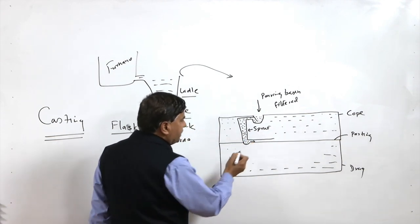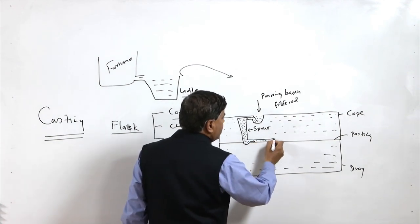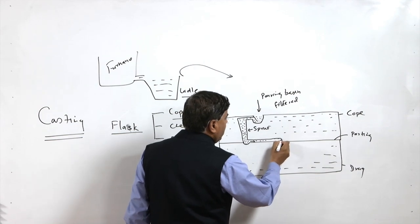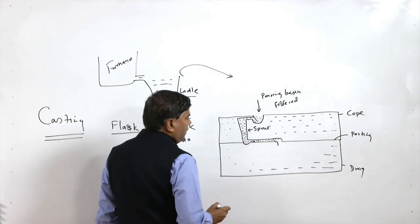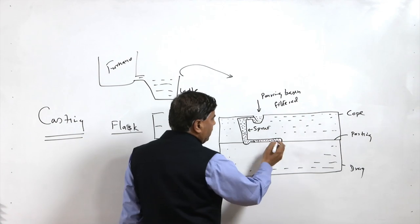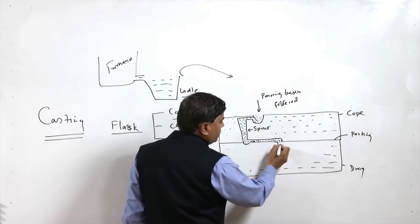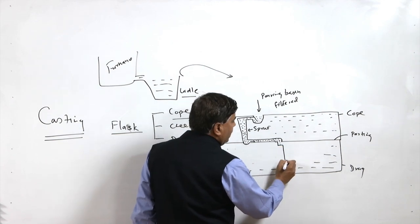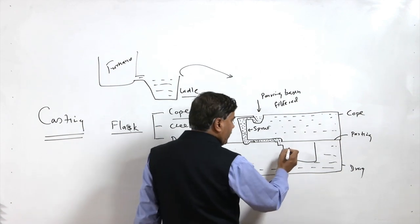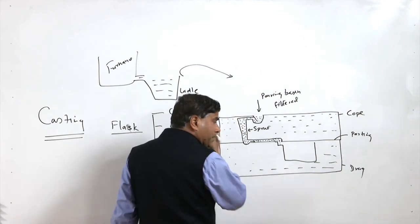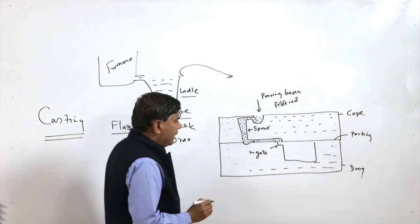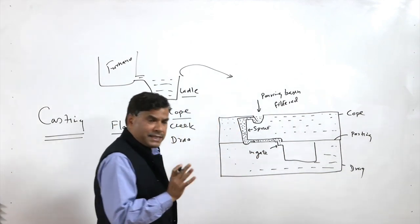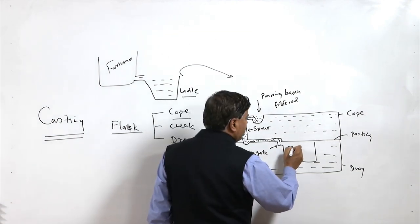After reaching the sprue base, molten metal starts flowing into the runner. The runner is designed to also help prevent the entry of light metals, oxides, impurities, slag, and dross — these are stopped at the top level and entry of molten metal takes place through the lower region. The region from which molten metal enters into the mould cavity is termed the ingate, and the cavity shaped according to the casting to be made is termed the mould.